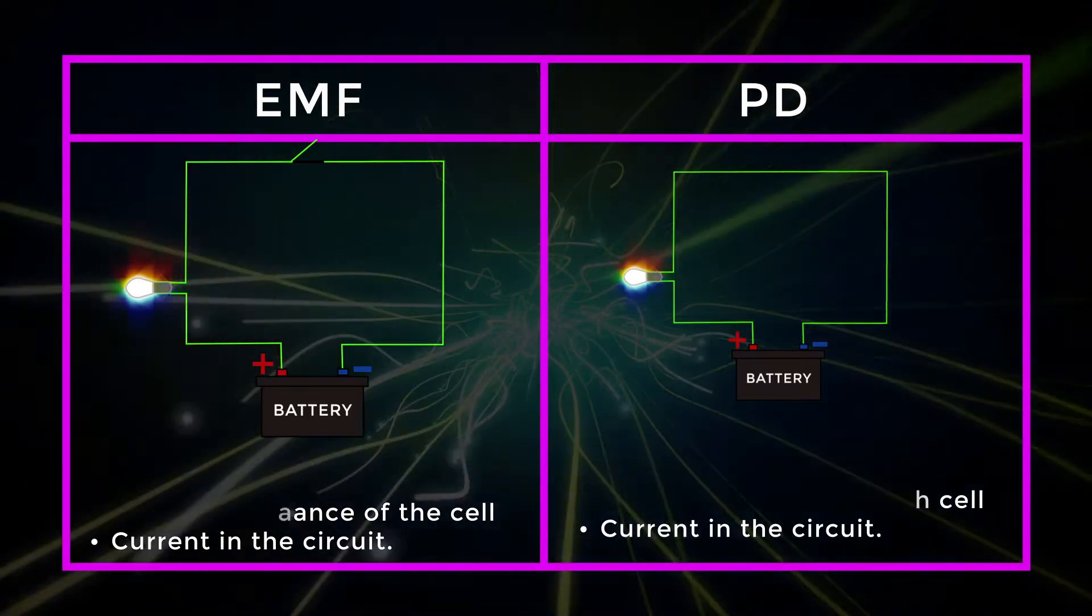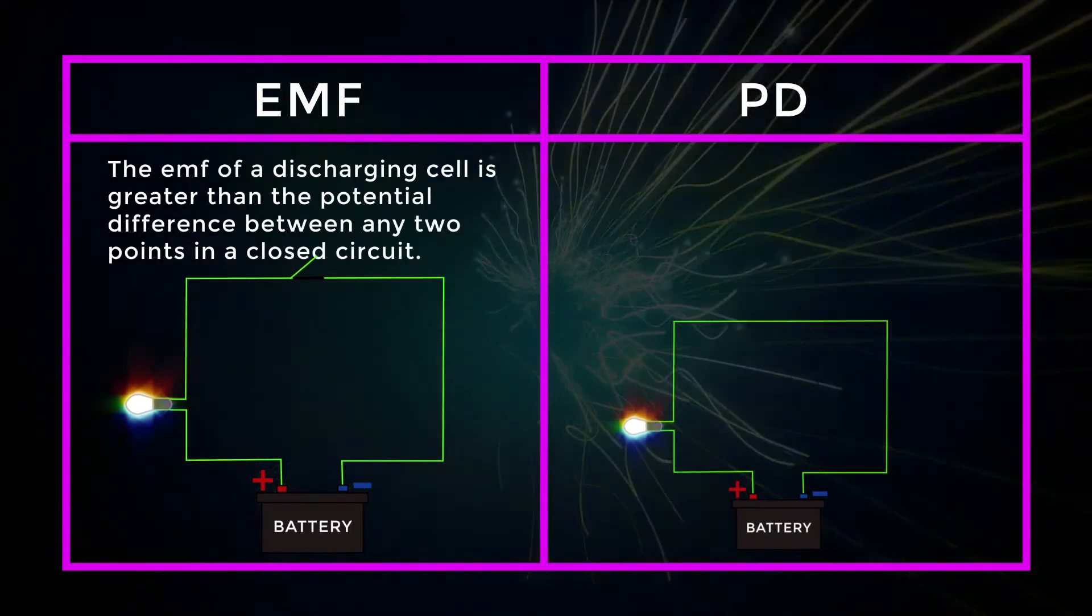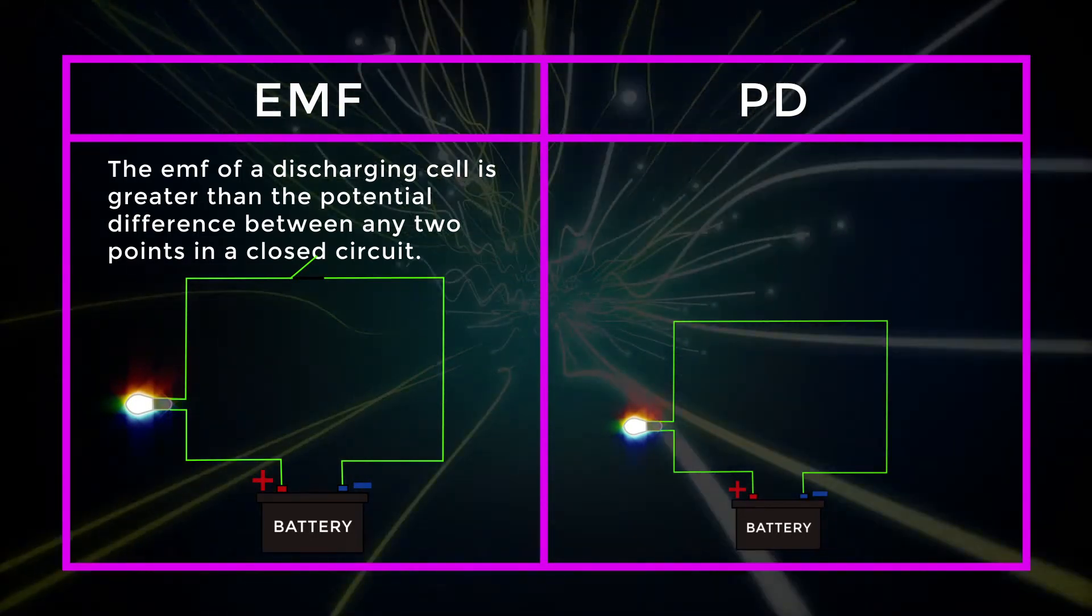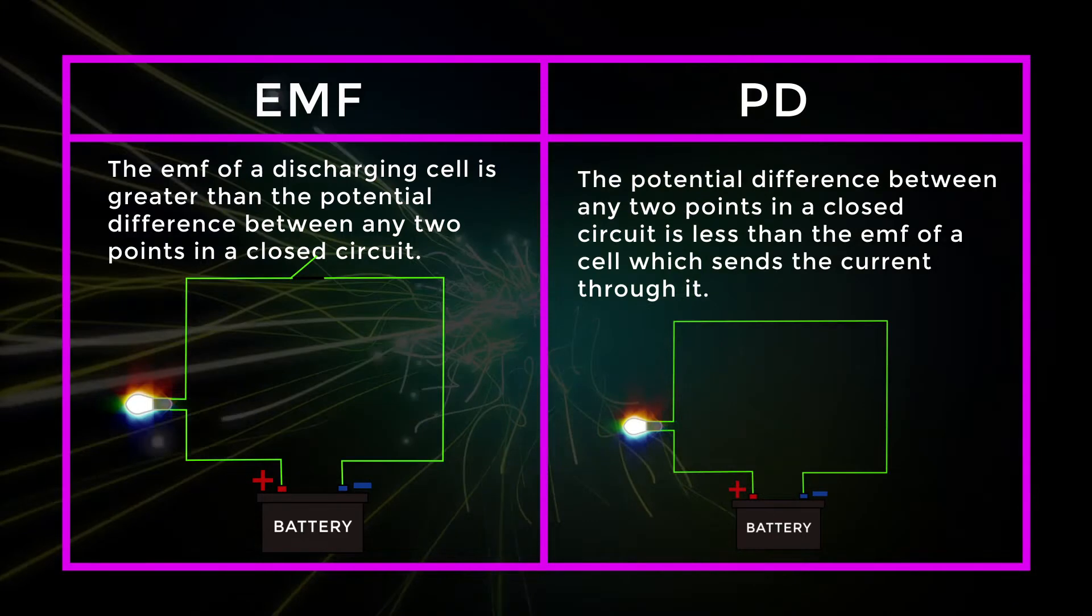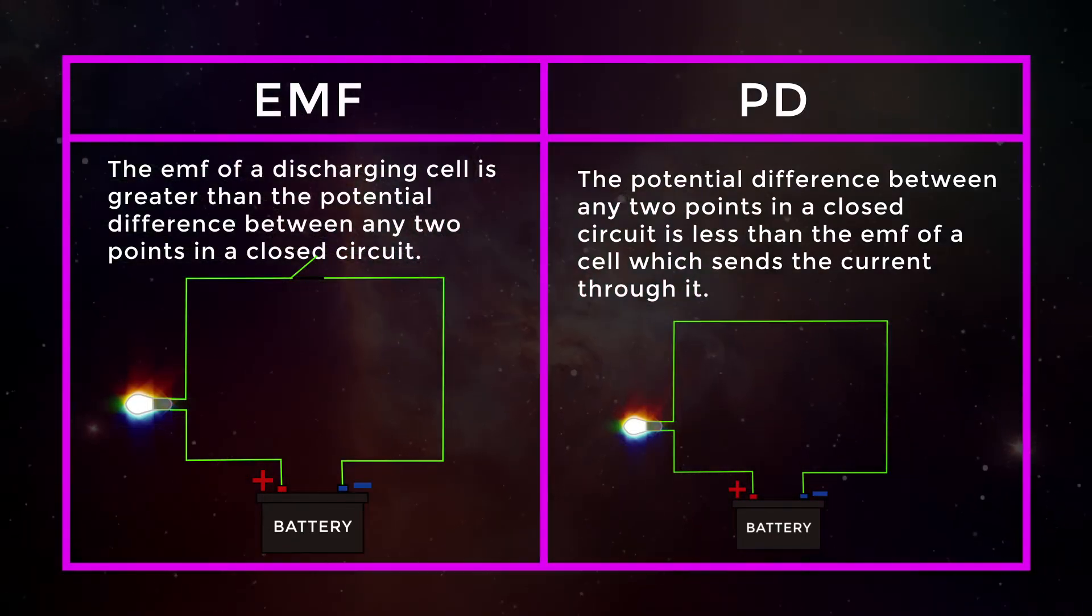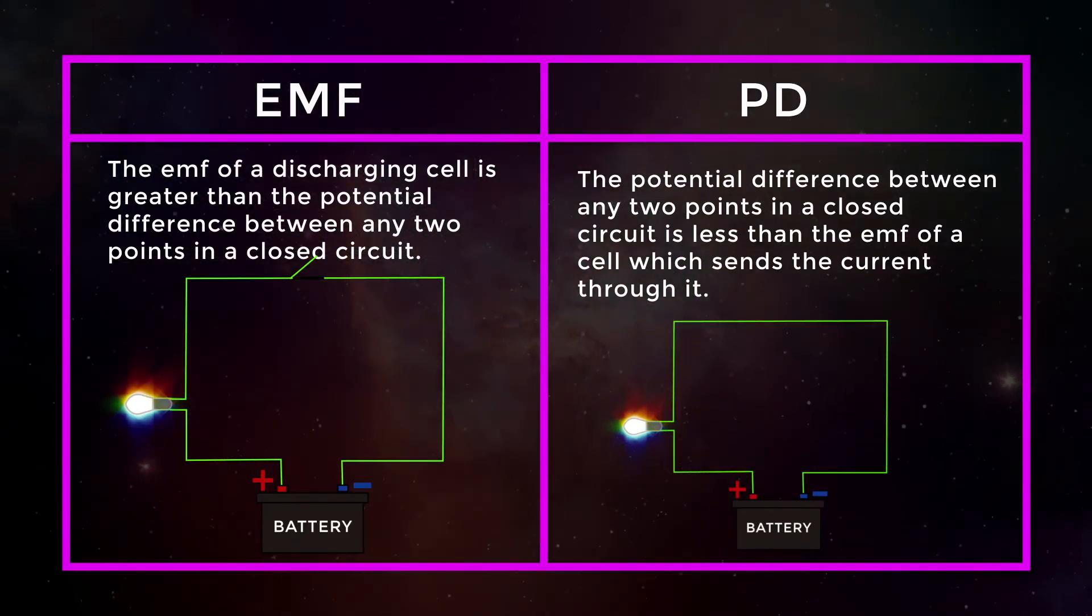The EMF of a discharging cell is greater than the potential difference between any two points in a closed circuit. The potential difference between any two points in a closed circuit is less than the EMF of a cell which sends the current through it.